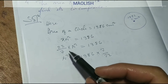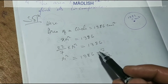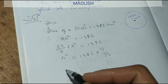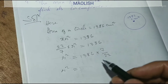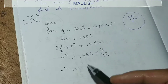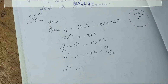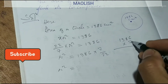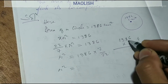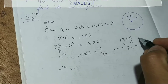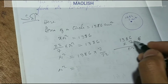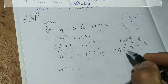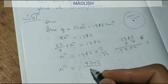R squared equals 1386 into 7 divided by 22. We interchange upside down. So calculating 1386 into 7: 7 sixes are 42, 7 eights are 56, 56 plus 4 is 60 — carry 6. 7 threes are 21, 21 plus 6 is 27 — carry 2. 7 plus 2 is 9. So 1386 into 7 equals 9702. Therefore R squared equals 9702 divided by 22.